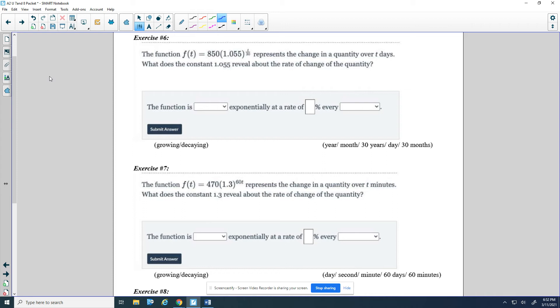It says the function f of t is 850 times 1.055 to the t over 30, represents the change in a quantity over t days. What does the constant 1.055 reveal about the rate of change of the quantity? So the first part should be easy. We're just picking growth or decay. It's growing, because it's bigger than 1.